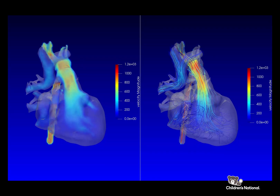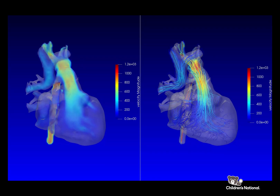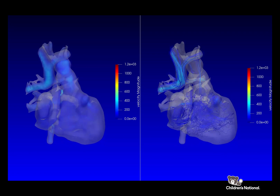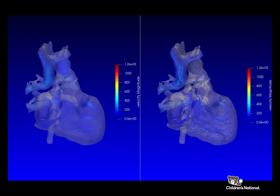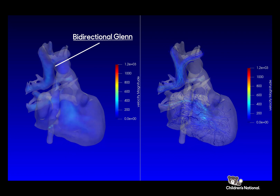In this video, you see a model and flow representation of someone with a single ventricle heart. This is a patient who has a congenital heart defect that results in one main ventricle, or one pump. This patient has undergone a series of cardiac surgeries already, resulting in a bidirectional Glenn, where the blood flow into the lungs is supplied by the veins connected to the head and arms — the superior vena cava.